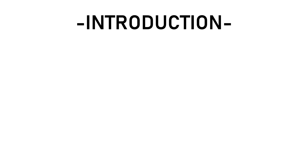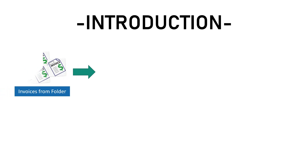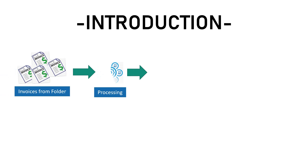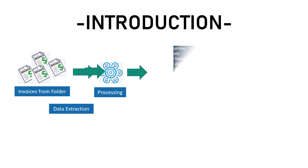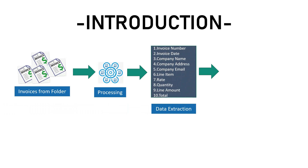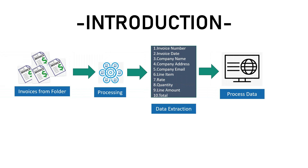Before jumping to the definition of UiPath data services, I want to quickly show you a process. The objective of the process is to read invoices from a folder, then process each and every invoice in PDF form. After processing, we extract details such as invoice number, invoice date, rate, quantity, line amount, and total. The extracted data is then pushed to a web application.